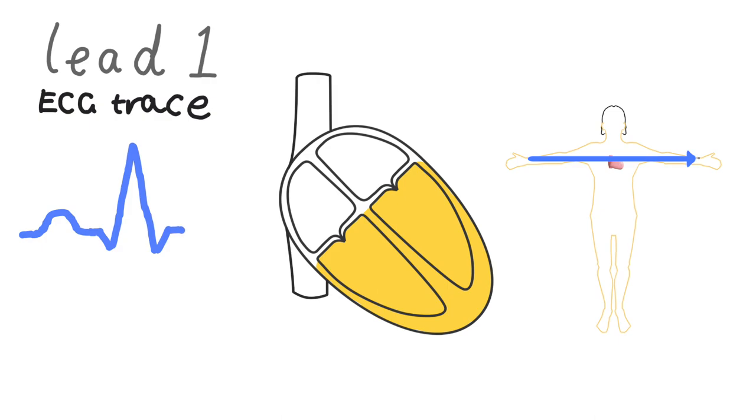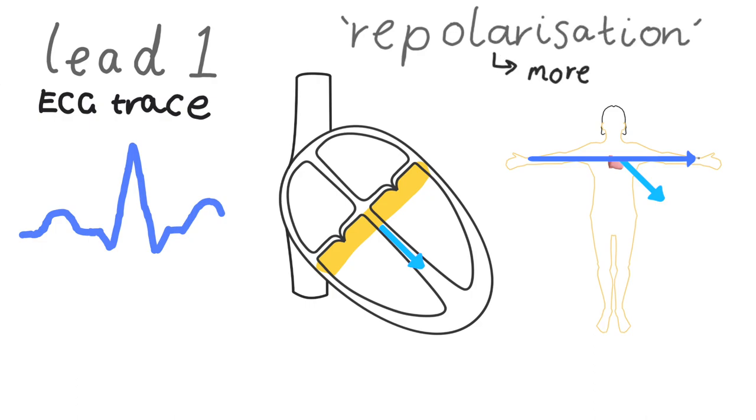This is an interesting and quite tricky point coming up. When we think about repolarization, our next stage of the cycle, we can think of it as a spread of negative current because depolarization, as I mentioned before, is the process of the inside of the cell becoming less negative. So repolarization is that of the inside of the cell becoming more negative.